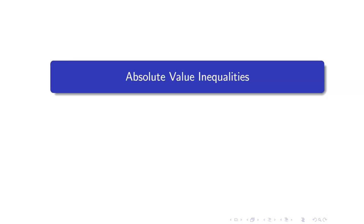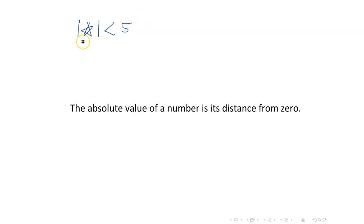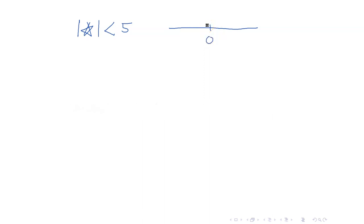In this lesson, I am going to talk about absolute value inequalities. Suppose that the absolute value of an expression is less than 5. Recall that the absolute value of a number refers to its distance from 0. So if this is your number line, what would be the numbers whose distance from 0 is less than or equal to 5? It would be these numbers — but you should also include the numbers on the other side, because their distance from 0 is also less than or equal to 5.